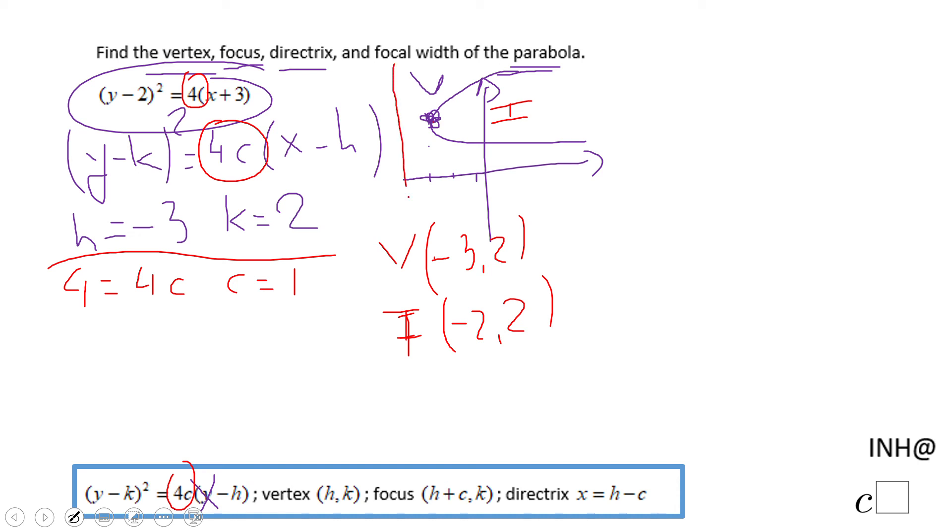And we need one more thing about this parabola, which is the directrix, which is going to be one unit to the left, which is x = -4, because you're moving one left from negative 3. And that's it.